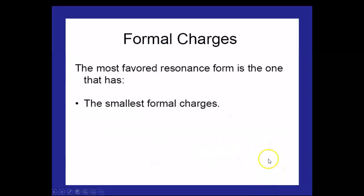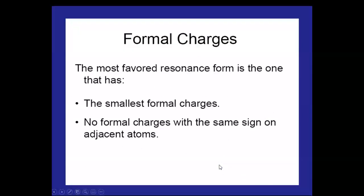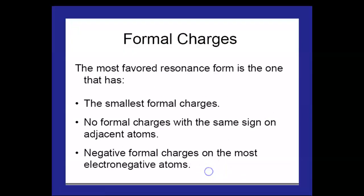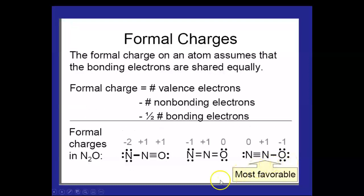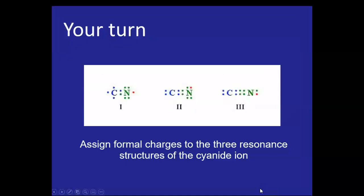So the most favored resonance form is the one that has the smallest formal charges. No formal charges with the same sign on adjacent atoms. Negative formal charges on the most electronegative atoms. That's the way to pick out the lowest energy in multiple resonances. So this is the most favorable we have arrived at that.